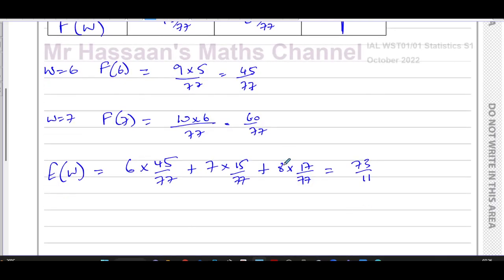And that gives us 73 over 11. 73 over 11, and that's our answer. We can leave it like that, we can round it to three significant figures, we can leave it as an exact fraction, that's probably better. So therefore E(W) is equal to 73 over 11. And there's the answer to this question.